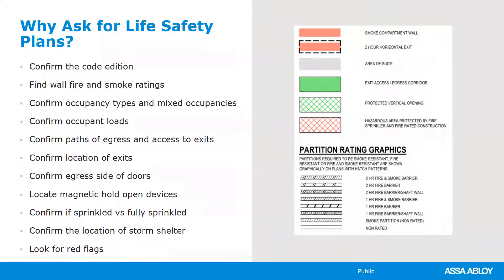We'll take a look briefly at each of these items and then expand upon them. When you ask for life safety plans, you want to confirm the code edition. You may have a project outside your normal range, and the life safety plans should indicate which code or codes the project falls under. Even if you're familiar with your state's adopted code, it's always best to take a look. You also want to be able to find firewalls and smoke ratings. Many times when you write a specification in the early stages of design, the door schedule doesn't have all information, including fire or smoke ratings.